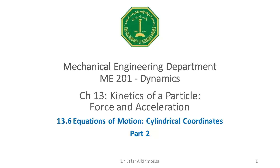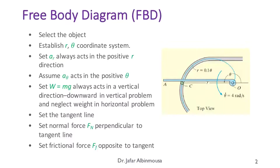Welcome again to part 2 of section 13.6, equations of motion in cylindrical coordinates. Let's see how we can draw the free body diagram for a problem that involves polar or cylindrical coordinates. For a polar system where the motion is planar, there is no action along the z direction. The coordinate has a radial direction pointing from the origin to the particle, and a transverse direction following the rotational motion counterclockwise. Note that a_r is positive in the direction of r and a_theta is positive in the direction of theta.